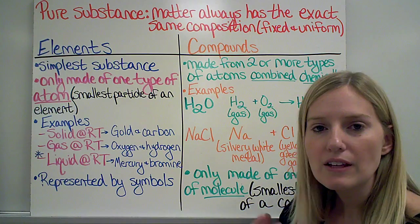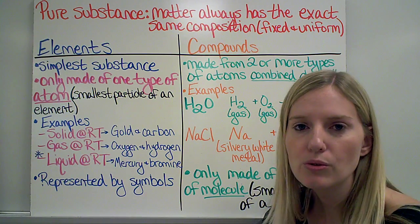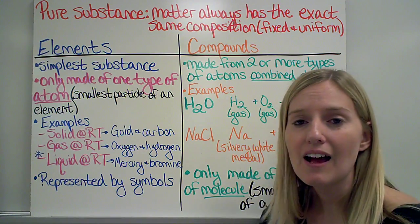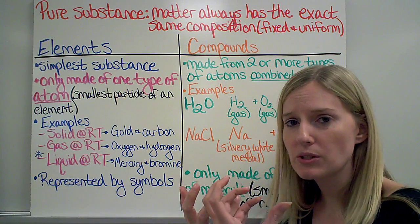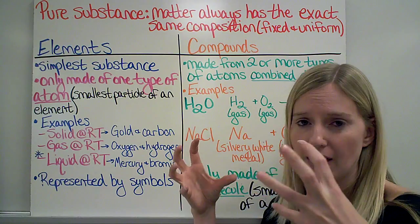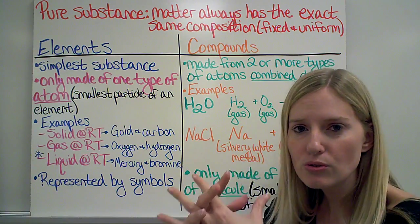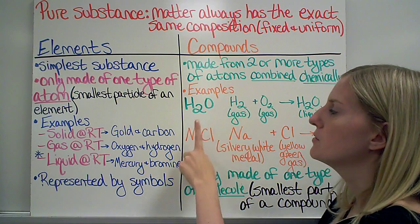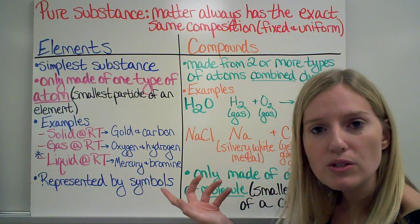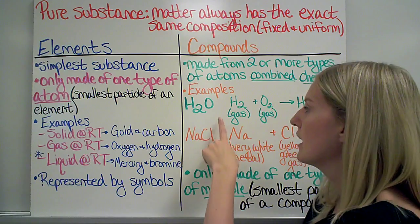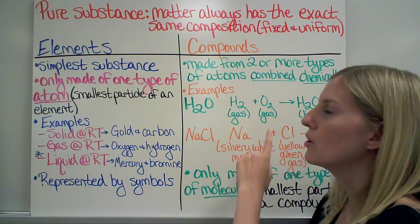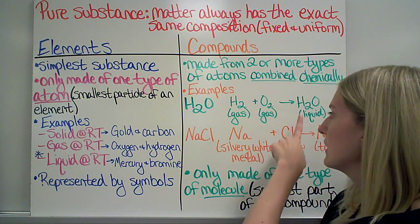Compounds then, that's when I'm going to combine two elements. And I'm going to do that chemically, meaning I'm not just putting them next to each other. They are participating in a chemical reaction to make a new substance, or a compound. So some examples are, H2O you know is water. So to make water, I put H, which is hydrogen, together with O, which is oxygen, to make water.